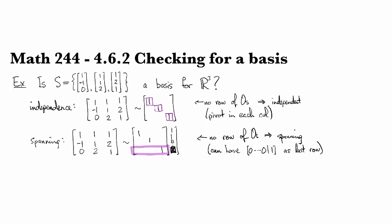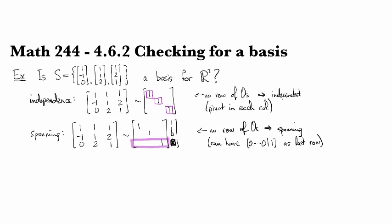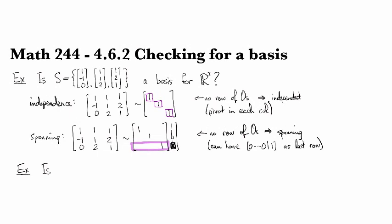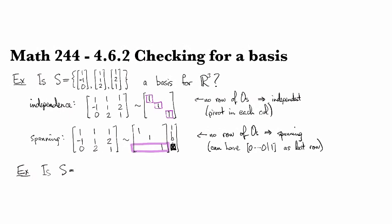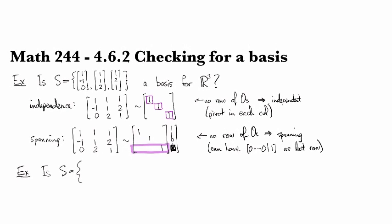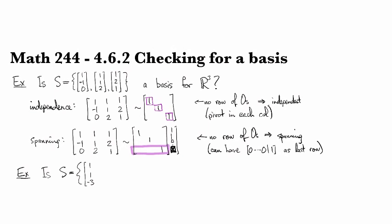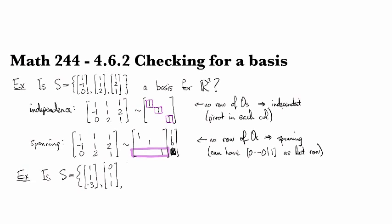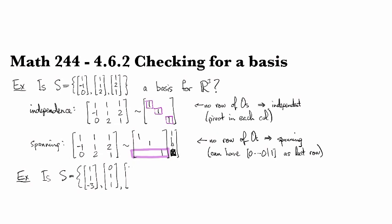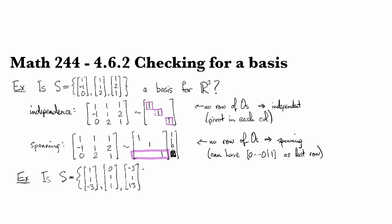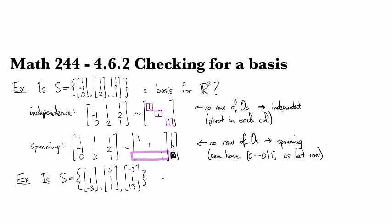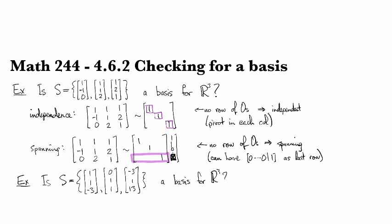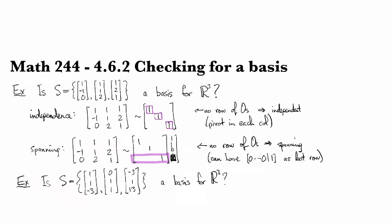Okay, so let's compare this with the example that we looked at before. So we had [1, 1, -3], [0, 1, 1], and [-3, 1, 13] as our three vectors. And we can check to see whether or not this is a basis.